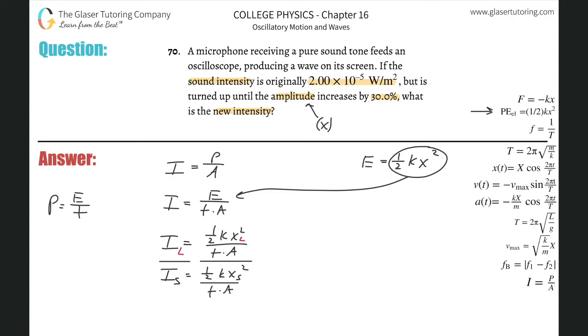Now what I can do is take the ratio between these two. Divide this and now this just becomes a little messy, but notice this all will cancel. Now I'm left with the simple ratio that the large intensity divided by the small intensity will be equal to the large amplitude squared divided by the small amplitude squared.